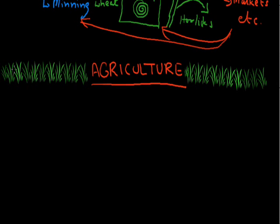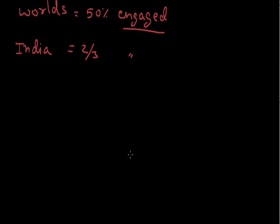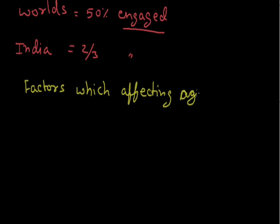Agriculture is a very old occupation of humans. Humans have been doing agriculture for thousands of years. Looking at today's present data, 50% of the world's people are engaged in agricultural activities. In India, 70% of people live in villages — that is, our total two-thirds of the population is engaged in agriculture. Now let us come to the factors which affect agriculture activity.